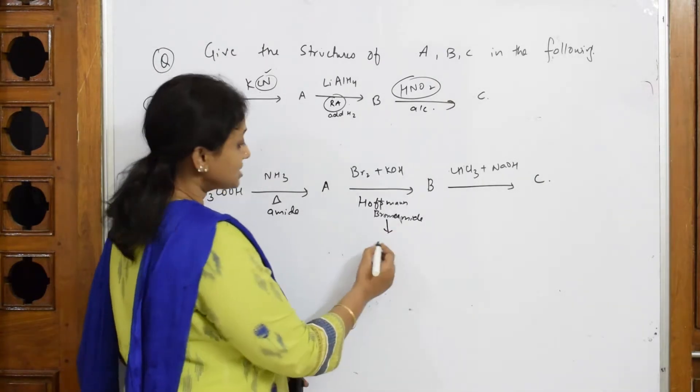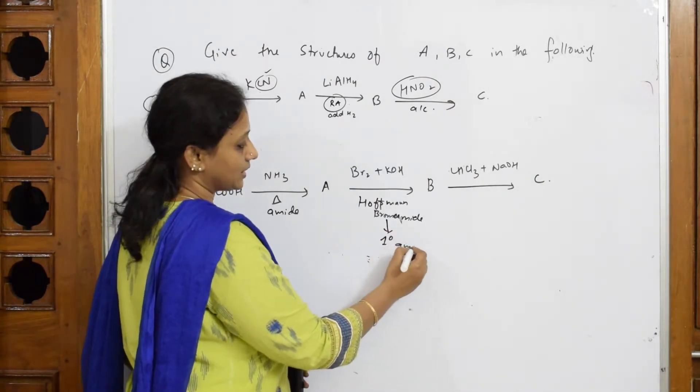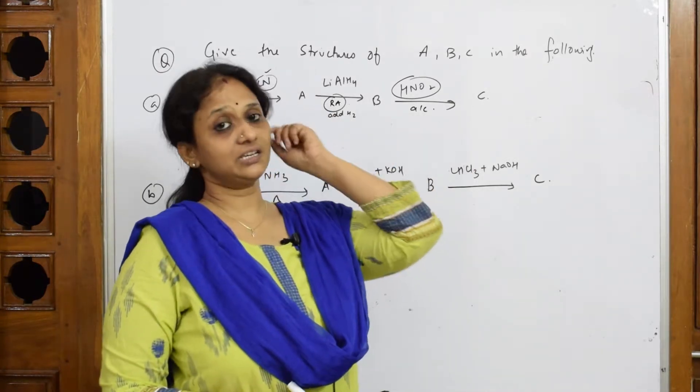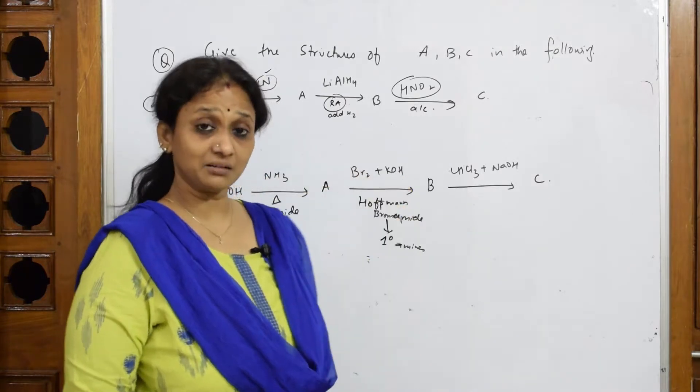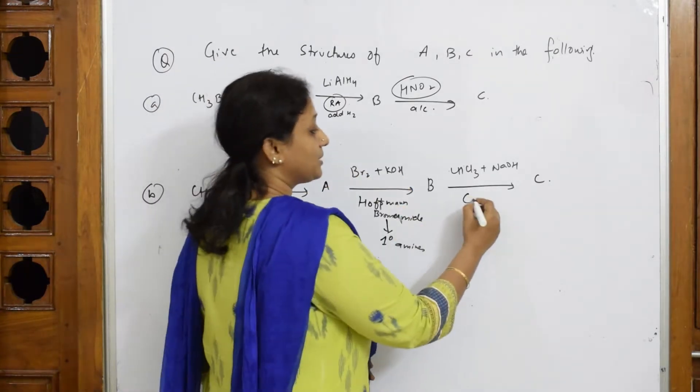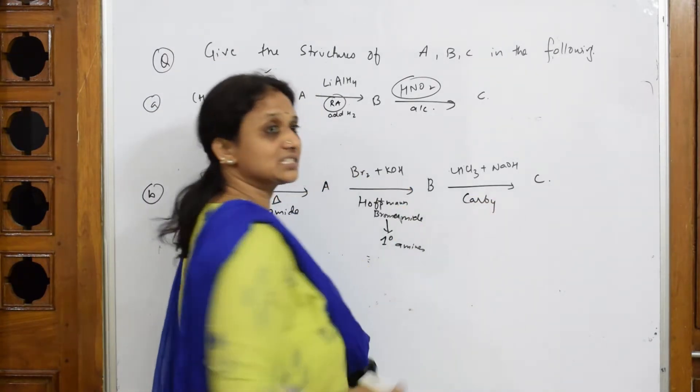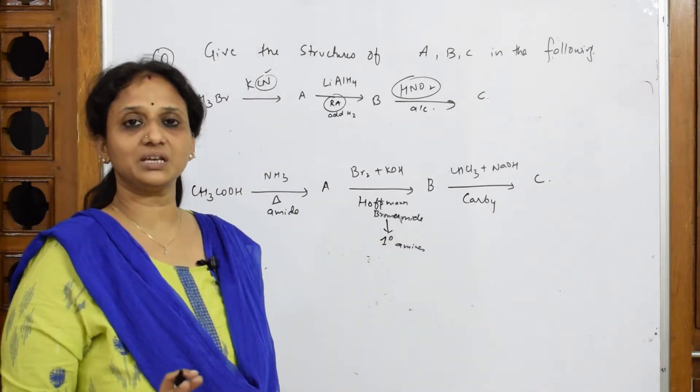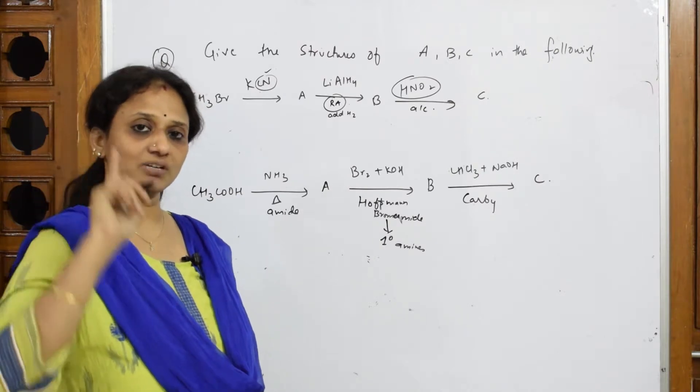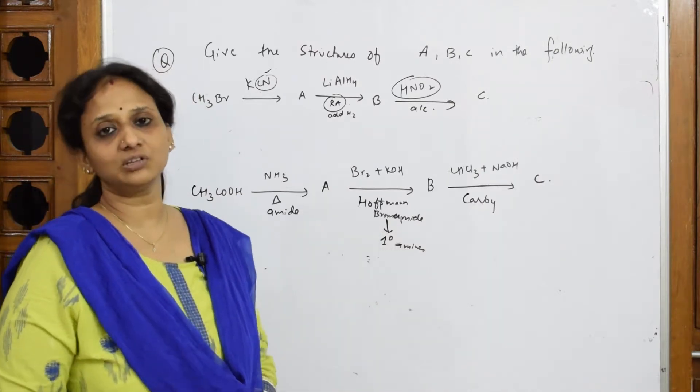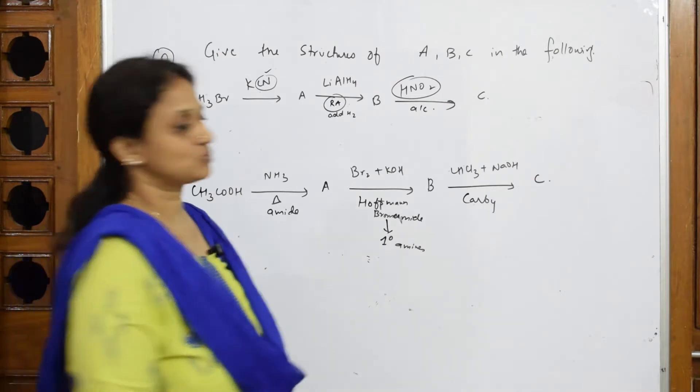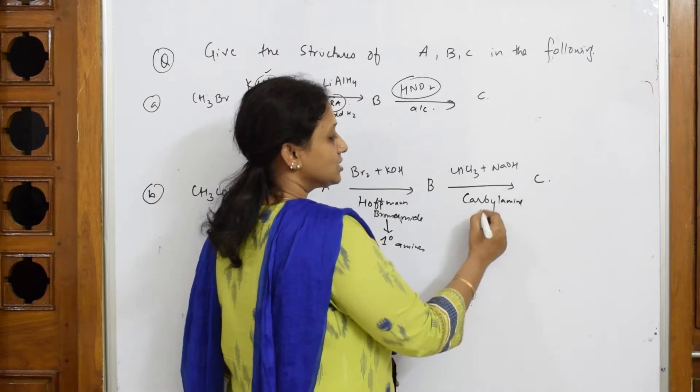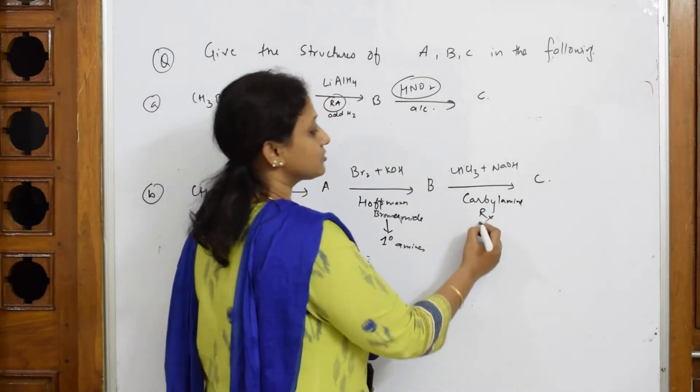What will Hoffmann bromomide reagents prepare? They're going to prepare amines, which amines? Primary amines. Now CHCl3 and NaOH - what is this reagent? This reagent basically is used in carbylamine reaction. Please watch the earlier videos then only do this, otherwise you will not be able to understand. CHCl3 and NaOH is carbylamine reaction. What will carbylamine reaction give me? It will always form isocyanides.